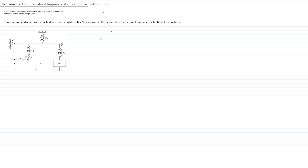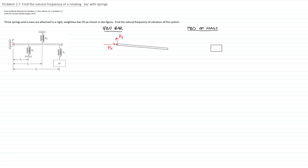The first thing I will do is the free body diagram of the system. I have the free body diagram of the bar and the free body diagram of the mass. I have a pivot, which is a pin that creates two reactions — it does not allow motion in X and does not allow motion in Y. Then I have a reactive force due to this spring, which is being compressed; therefore, the force goes upwards.